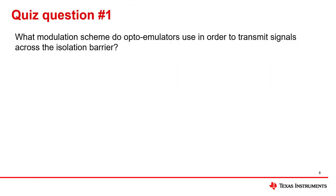Now we have some quiz questions regarding the topics we covered about optoemulators. Please pause the video between each question to gather your thoughts. Question number one: what modulation scheme do optoemulators use in order to transmit signals across the isolation barrier? Please pause and take a few minutes to answer the question.